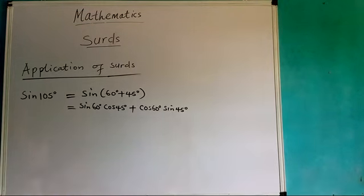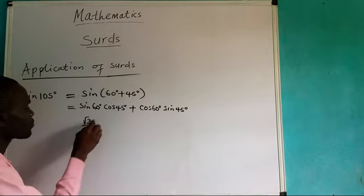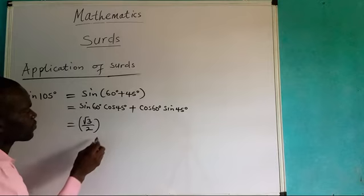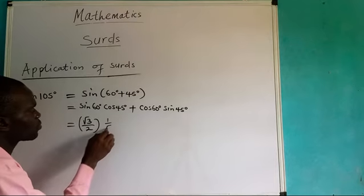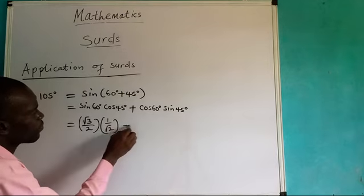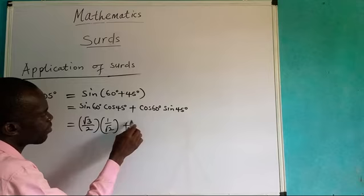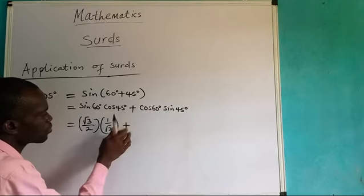Now can I use the ratio? For sine 60 degrees, you simply have root 3 over 2. And for cosine 45 degrees, we have 1 over root 2. And for cosine 60 degrees, we have 1 over 2.